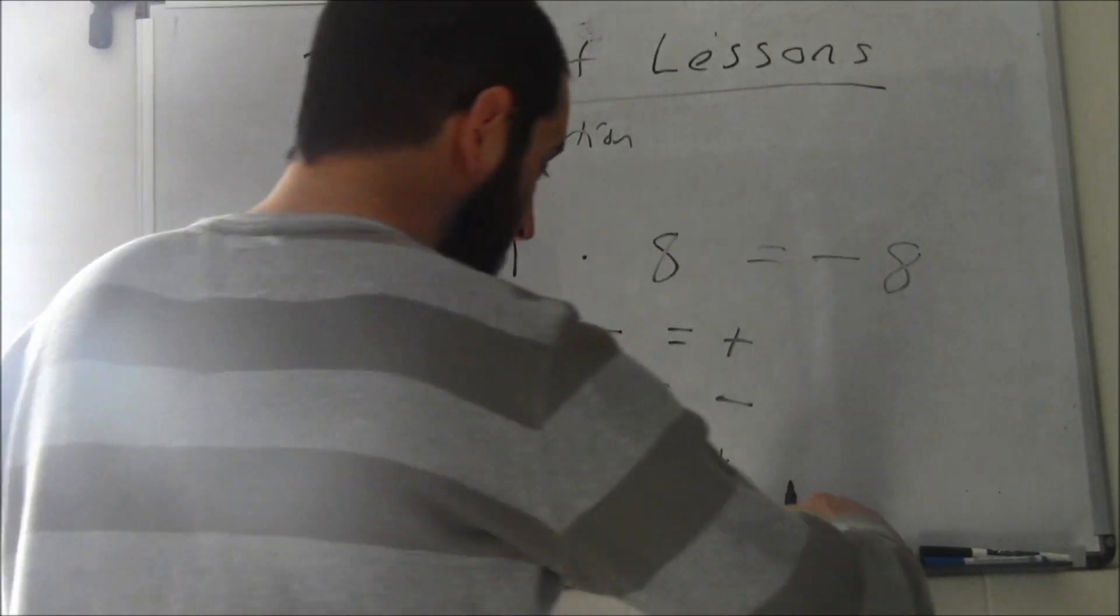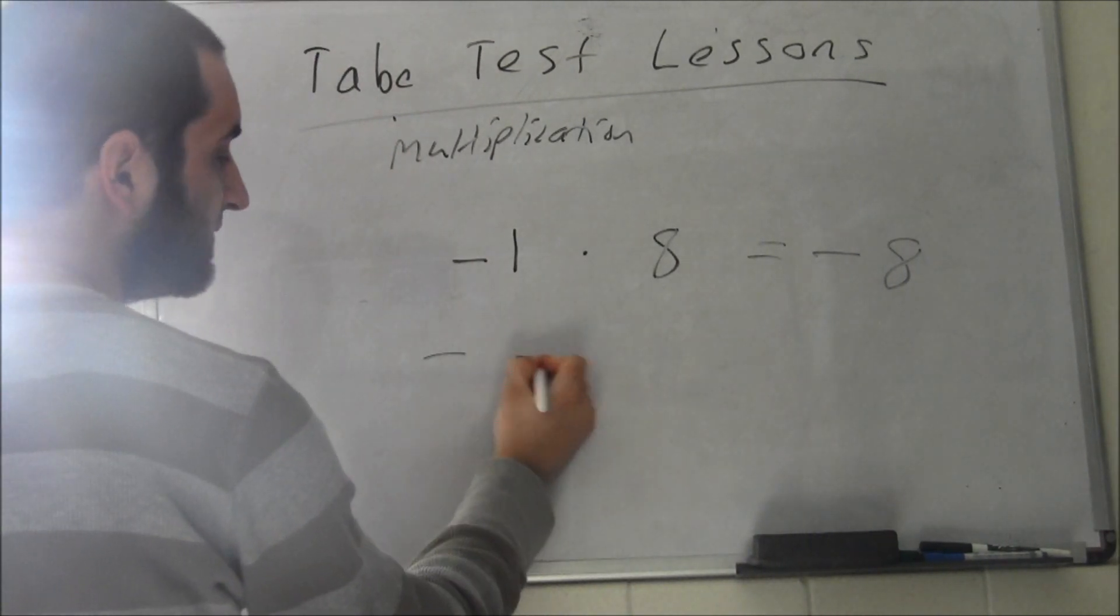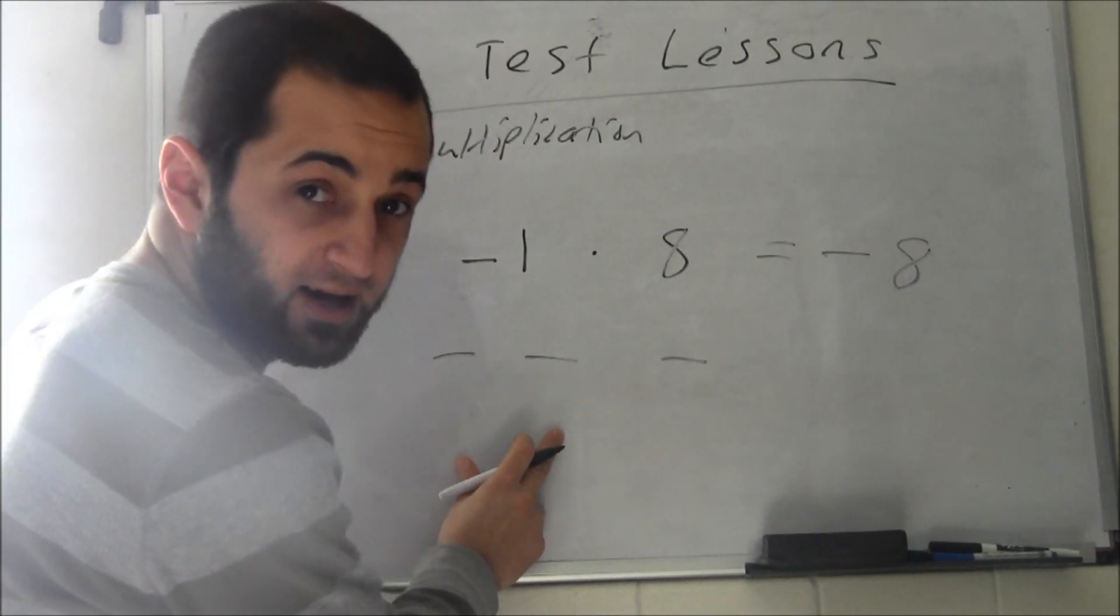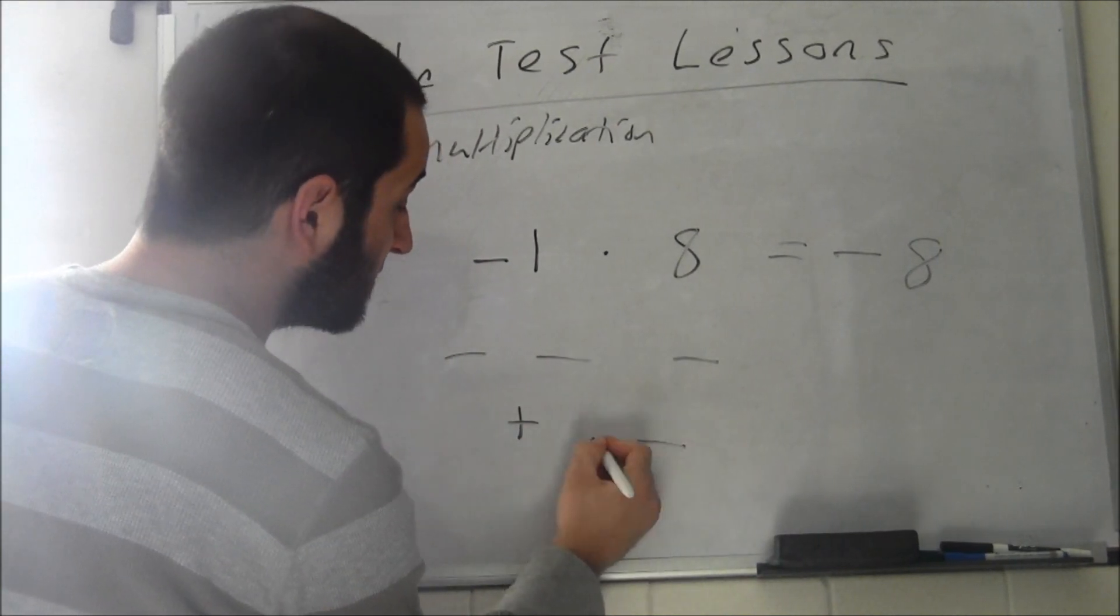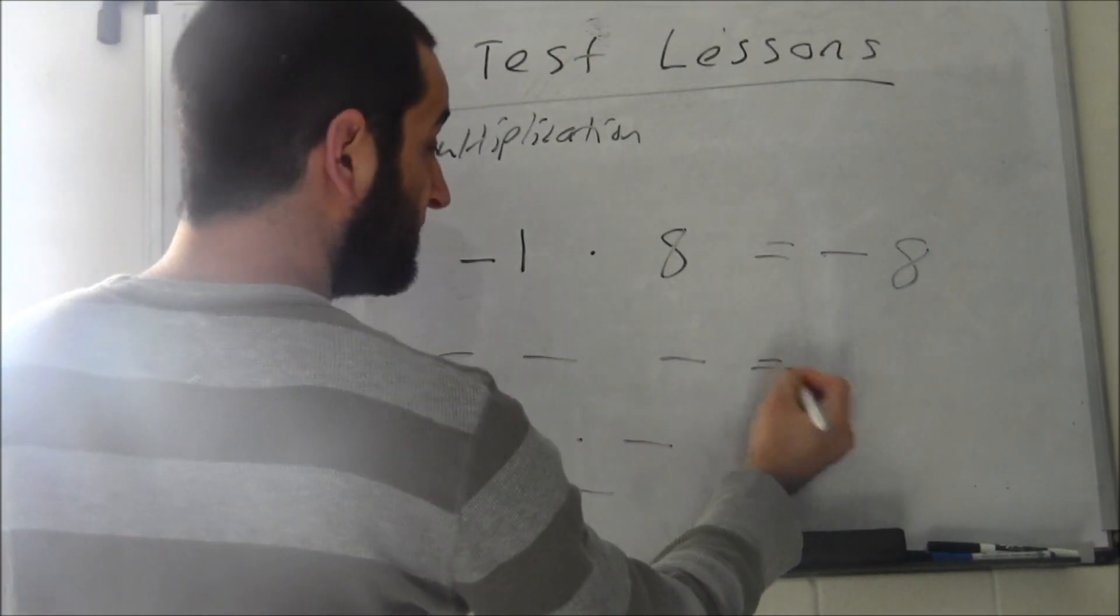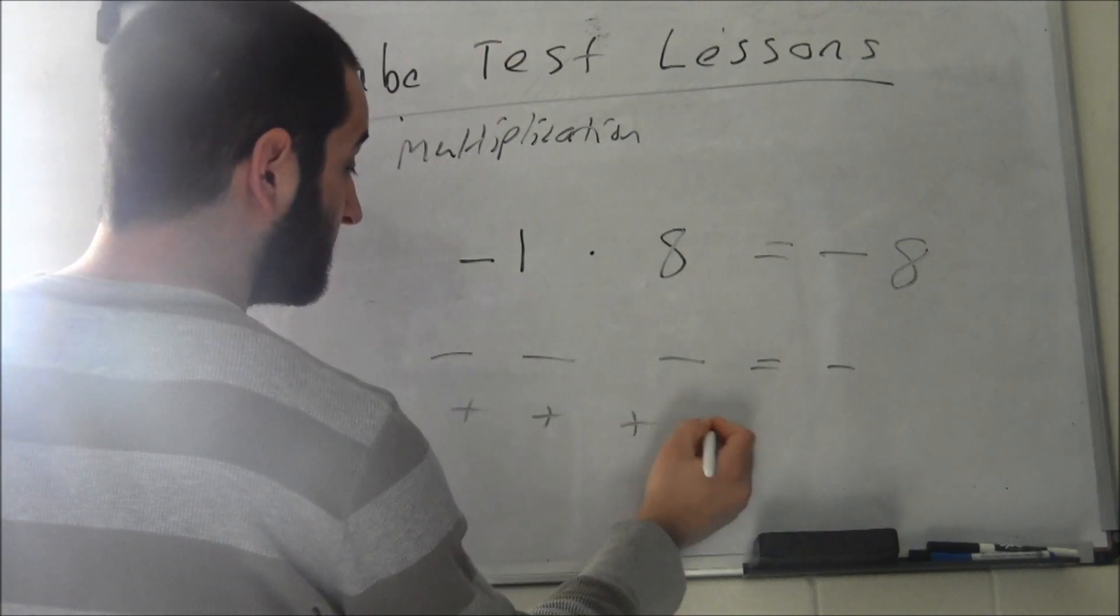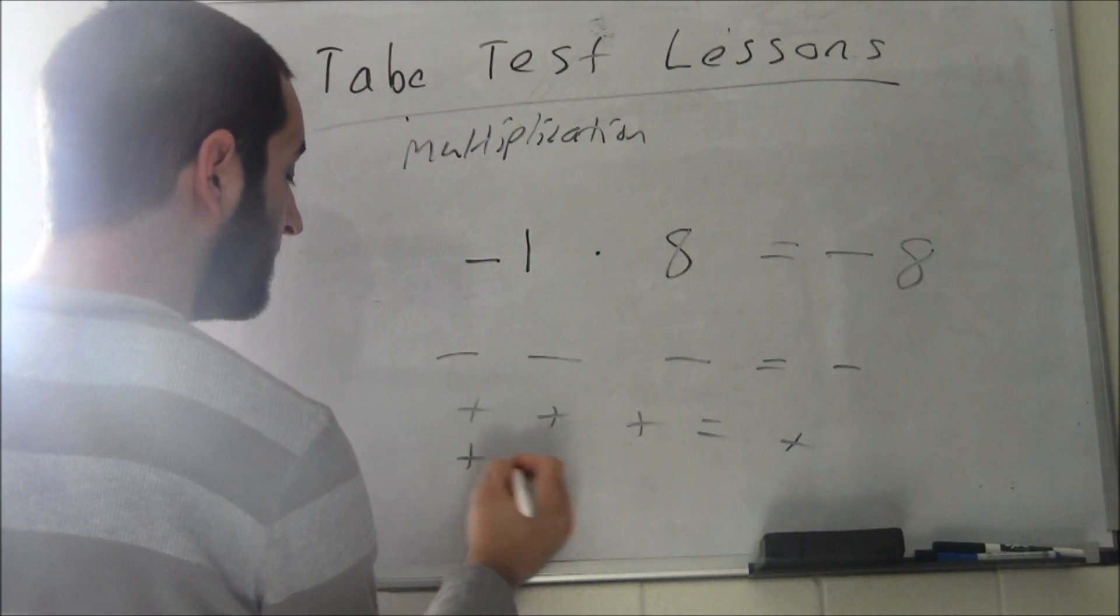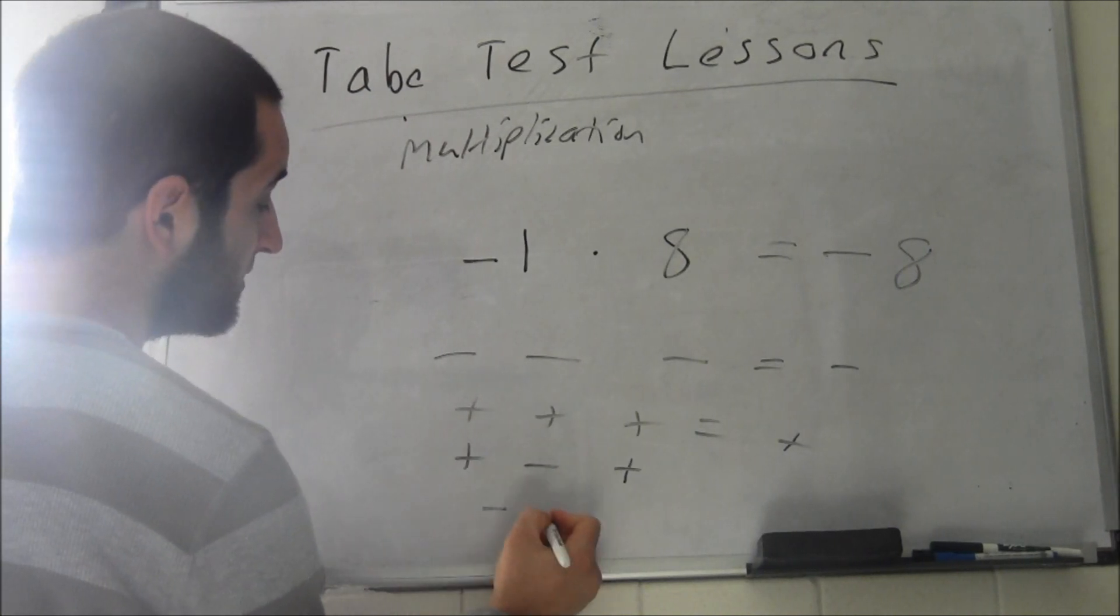What if it's three negatives? You do two at a time. Negative times negative is positive, and positive times negative is negative, so that's negative. If you have plus plus plus, it's gonna be plus. If you have plus minus plus, it's gonna be plus minus is minus times plus is minus, so it's gonna be negative.